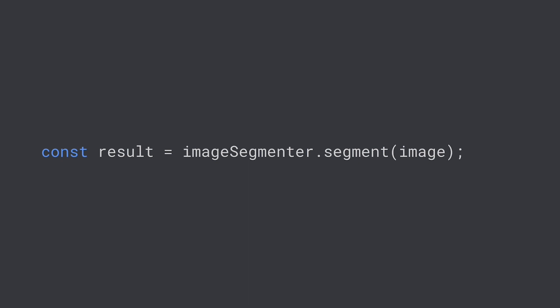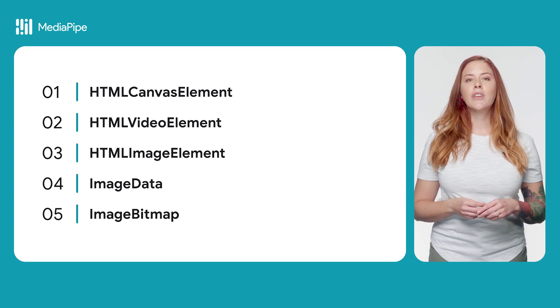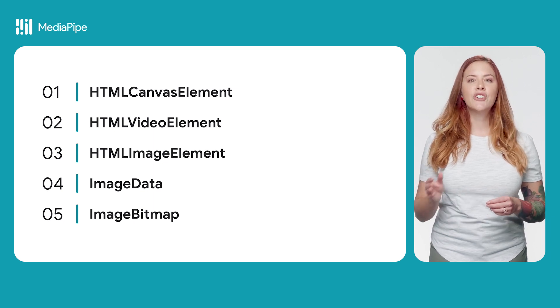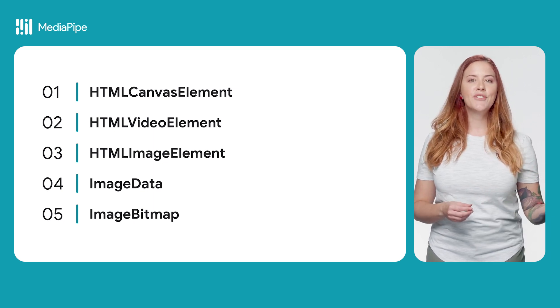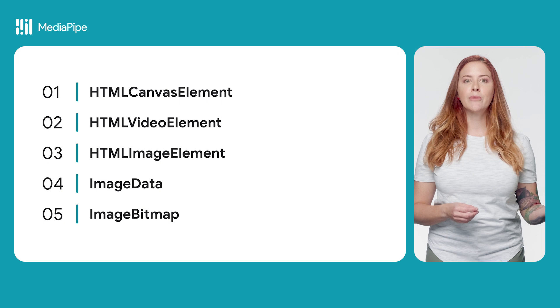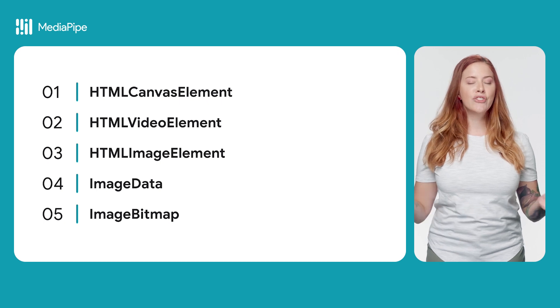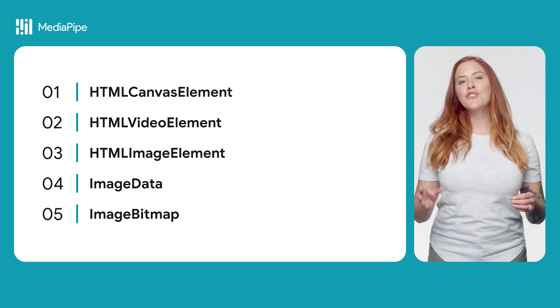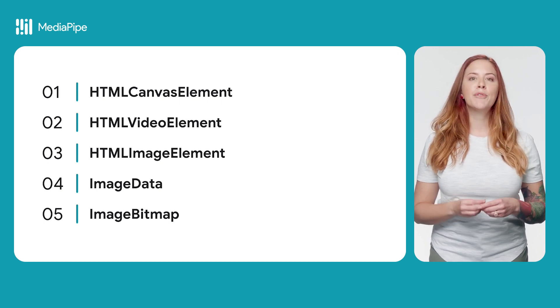To run segmentation on an image, use the ImageSegmenter segment method, passing the image source. This function is synchronous, which is a good thing to keep in mind when designing your UI. The source can be an HTML canvas element, HTML video element, HTML image element, image data, or image bitmap.